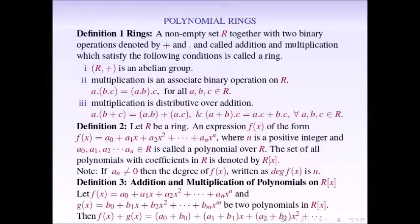An expression f(x) = a0 + a1x + a2x² + ... + anx^n, where n is a positive integer and the coefficients a0, a1, a2, ..., an are elements of R, is called a polynomial over R. The set of all polynomials with coefficients in R is denoted by R[x]. If the leading coefficient an ≠ 0, then the degree of f(x), written as deg(f(x)), is n.